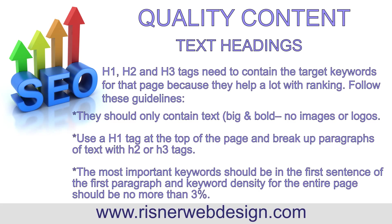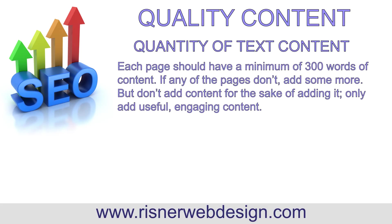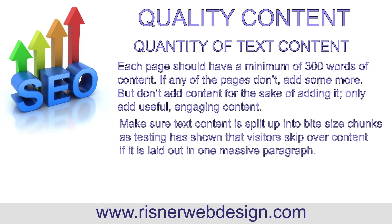Keywords should be in the first sentence of the first paragraph and keyword density should be no more than 3%. Each page should have a minimum of 300 words of content. If any of the pages don't, add some more, but don't add content for the sake of adding it — only add useful, engaging content. Make sure each text content is split up into bite-sized chunks, as testing has shown that visitors skip over content if it is laid out in one massive paragraph. The main heading would have an H1 tag and each paragraph heading would have an H2 or H3 tag.